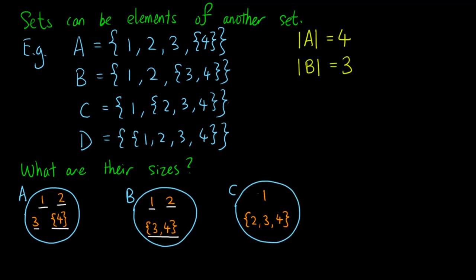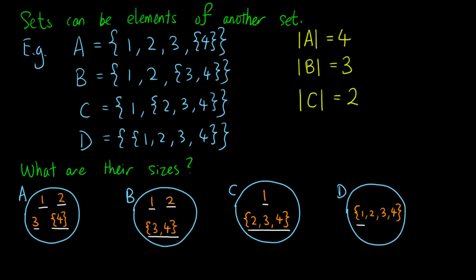Using the same argument, the set C contains only two elements: the element 1, and the element which is the set containing 2, 3 and 4. So the size of C is 2. For D, the short answer is 1, where we note that the double curly brackets made all the difference. If there were only one pair of curly brackets, then 1, 2, 3 and 4 would all be elements of D, resulting in the size of D being 4.